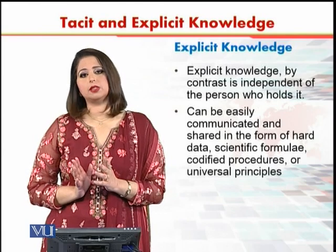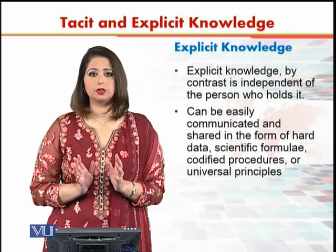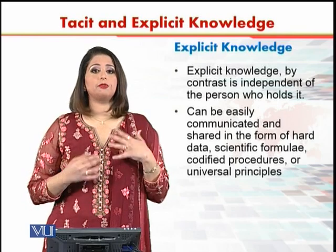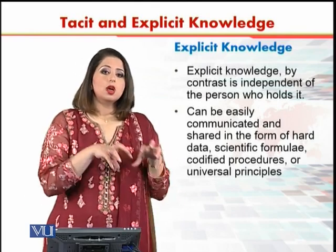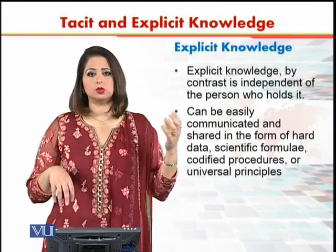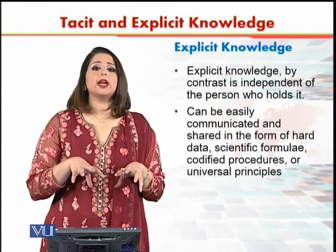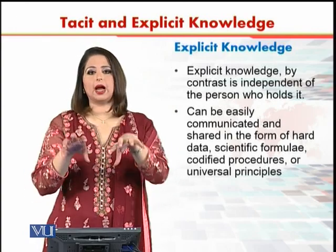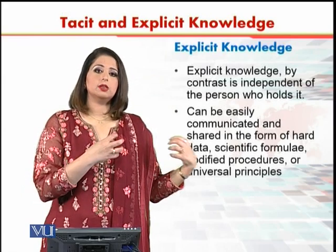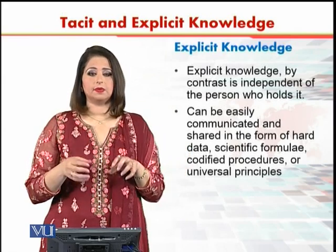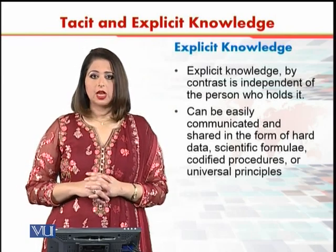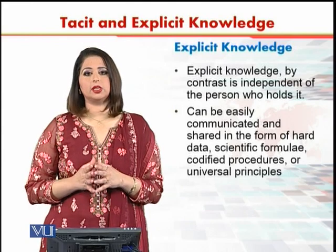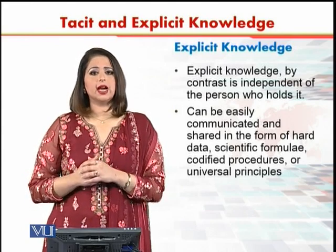On the other hand is explicit knowledge. Explicit knowledge is kind of simple to understand, and by contrast it is independent of the person who holds it. So what is the difference? Explicit knowledge can be made independent from the person who has it. For example, if there is a book, that is independent knowledge — it doesn't matter who wrote it, it can go into the minds of a number of people. It is not linked with the mind of the person who has read it. When something can be written in a book, in a formula, or in some kind of instructions, that is explicit knowledge.